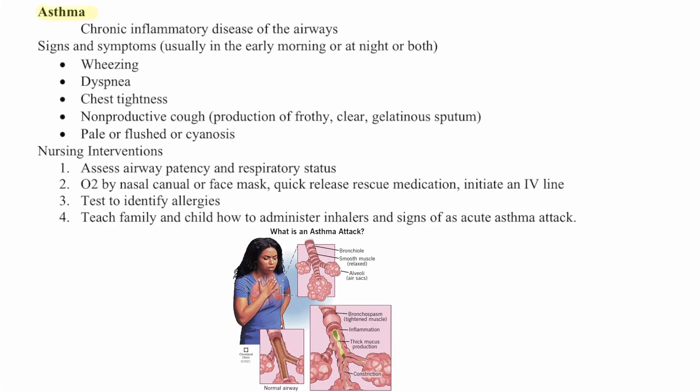Then we have asthma — a chronic inflammatory disease of the airways. Signs and symptoms usually come on in the early morning or at night and include wheezing, dyspnea, chest tightness, and a non-productive cough. It can also involve production of frothy, clear, tenacious sputum, and the patient may appear pale, flushed, or cyanotic. Nursing interventions include assessing airway patency and respiratory status, providing oxygen by nasal cannula or face mask, quick-release rescue medication, initiating an IV line, testing for allergies, and teaching the family how to administer inhalers and recognize signs of an acute asthma attack.